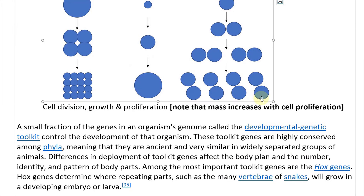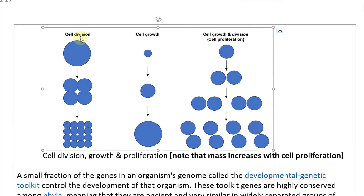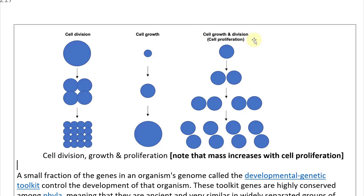Here's a comparison: in cell division, a cell splits into two, then four — but mass stays the same. In cell growth, the cell just gets bigger. In cell proliferation — both growth and division together — the cells divide and get bigger each time, so mass increases. A mother cell grows and divides to produce two daughter cells; cell growth and cell division can also occur independently of one another.